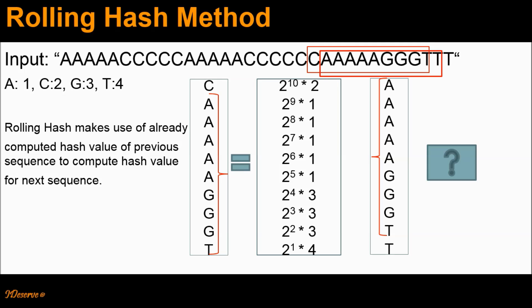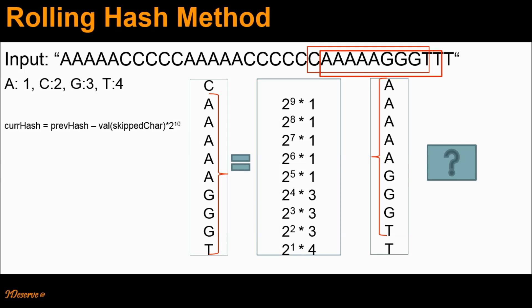For these 9 common letters, we have already computed the hash value in the old sequence and we will make use of that while computing the hash value for the new sequence. The first difference is that letter C is removed in the new sequence. Therefore, we don't want to consider the hash value computed for character C and we remove that. Essentially, from the previously computed hash value, we have removed this factor — that is, the value of the skipped character: 2 × 2^10, which is the weight for character C. Also note that the remaining 9 characters which are common between these sequences are shifted by one position in the new sequence.